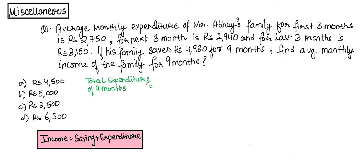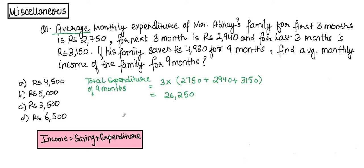We have been given the average expenditure, so to find the total, we multiply by three. Total expenditure of nine months = 3 × 2750 + 3 × 2940 + 3 × 3150 = 3 × (2750 + 2940 + 3150). The answer comes to 26,250 — this is the total expenditure for nine months.